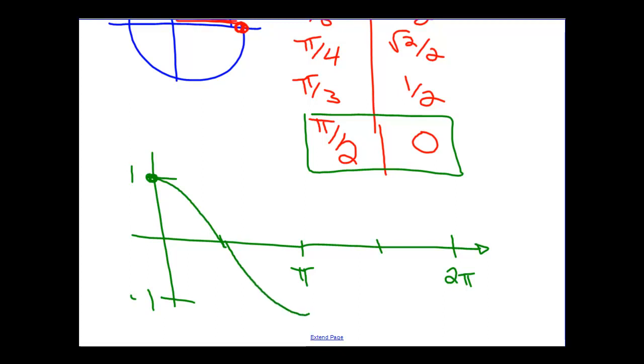And at π, at 180 degrees, cosine has its smallest value. It's minus 1, it's all the way over to the left. And then the values start to come back.